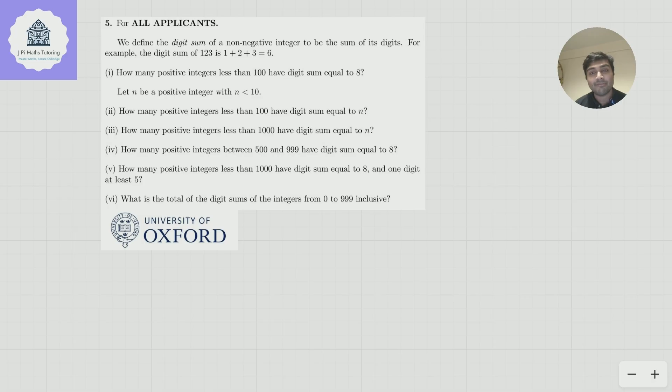Part 4: How many positive integers between 500 and 999 have a digit sum equal to 8? Part 5: How many positive integers less than 1,000 have digit sum equal to 8 and one digit at least 5? And finally, part 6: What is the total of the digit sums of the integers from 0 to 999 inclusive?